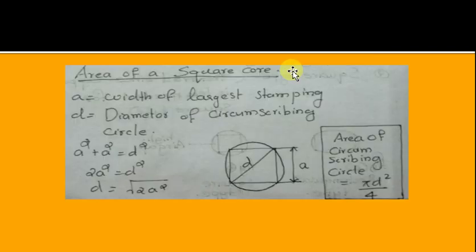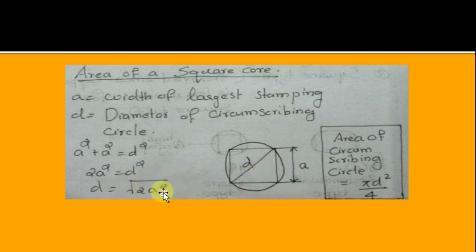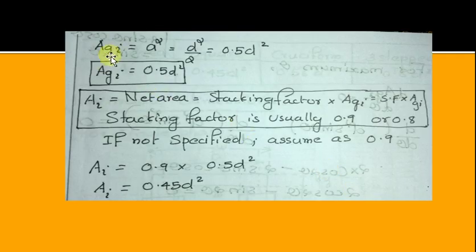Area of Square Core: If A is the length of the side and D is the diagonal, then using Pythagoras theorem, A² + A² = D². From this, D = √(2A²), or A = D / √2. The area of the circumscribing circle is πD² / 4. Gross area A_GI is A².